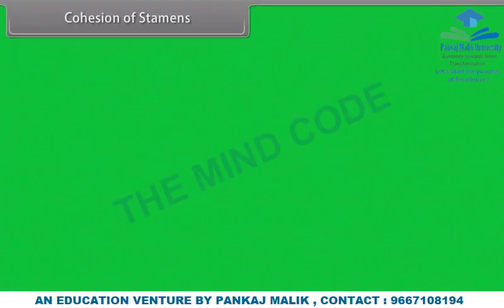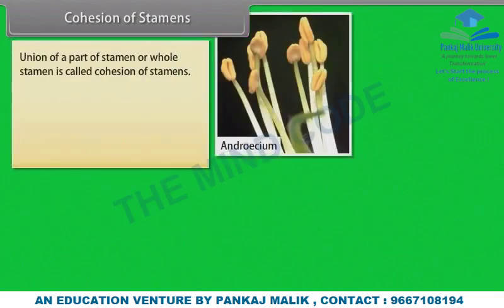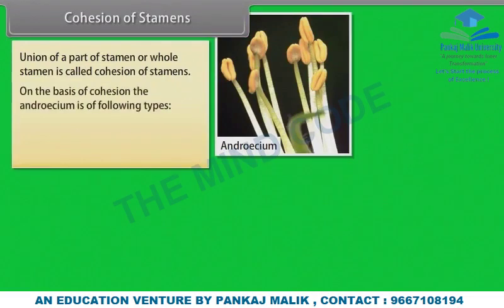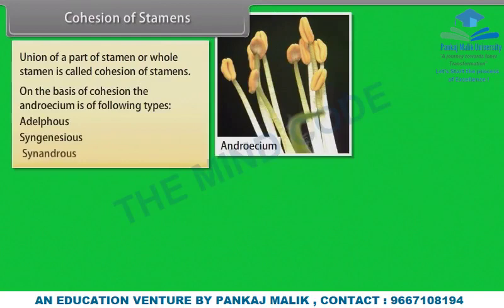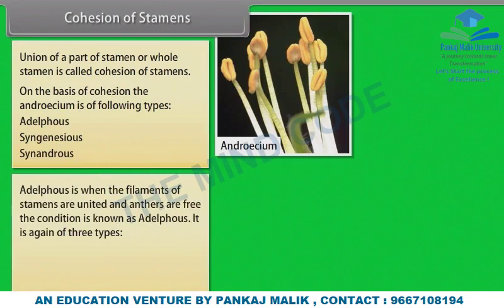Union of a part or whole stamen is called cohesion of stamens. On the basis of cohesion, the androsium is of the following types: Adelphous, Syngenecious, and Synandrous. Adelphous is when the filaments of stamens are united and anthers are free.